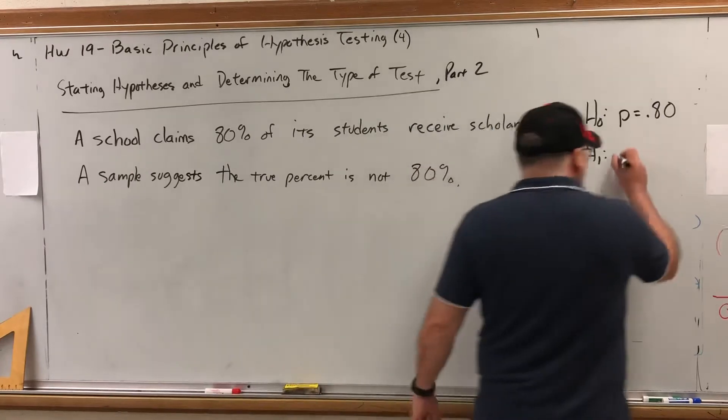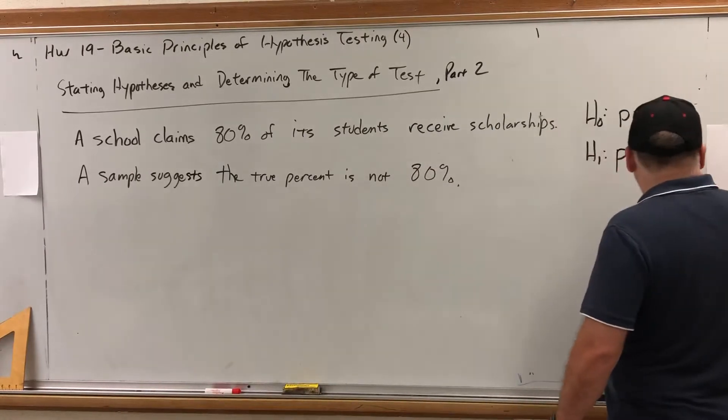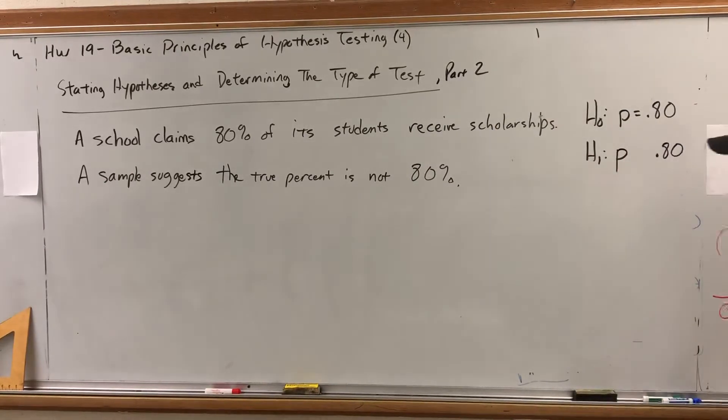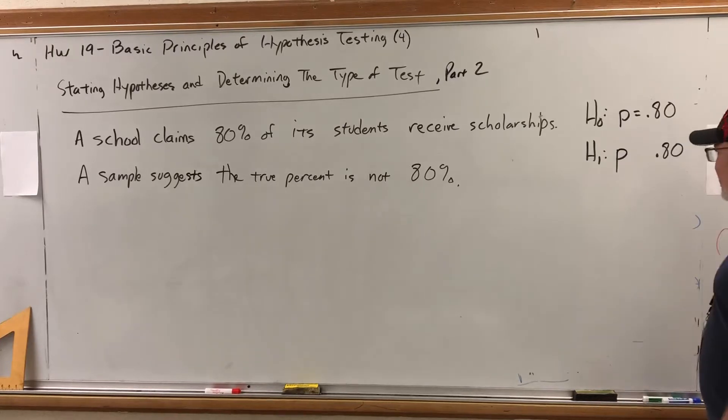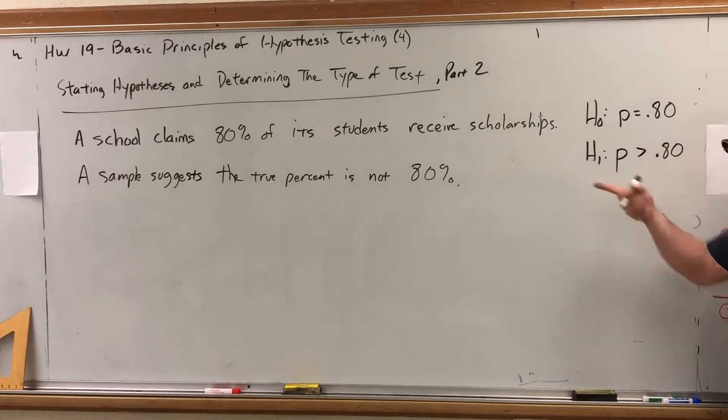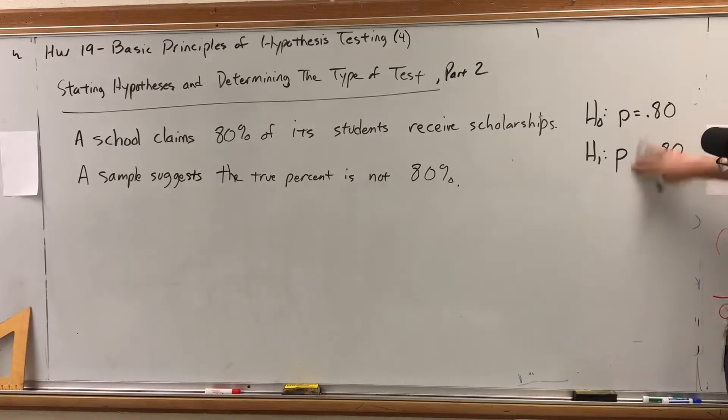What symbol could we put to indicate that the proportion is not 80%? Well, we can't put greater than because it could be less than and still be different. And vice versa, we couldn't put less than because it could be greater than and still be different. In other words, this is wrong because it might be less than, which would still be different. And for the same reason, this is wrong because the true percent might be greater than 80% and still be different.